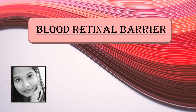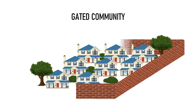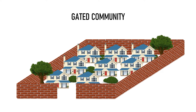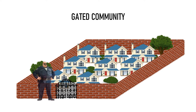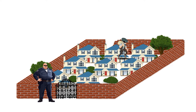To understand the concept of blood retinal barrier better, I would like you to imagine a gated community. A gated community has houses on the inside and it is bordered by a wall on all four sides. If an outsider wants to enter this community, then he can only enter through a gate, which is manned by a security guard who only lets certain verified individuals enter. But in case there is a breach in the walls, then stray animals or even thieves can enter without any restriction, disturbing the peace and quiet of this community.